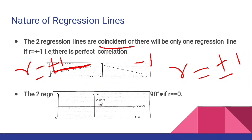Second condition: agar haari do regression lines ek doosre ko 90 degree par intersect karein — if two regression lines intersect each other at 90 degrees — yahan x on y aur y on x ek doosre ko 90 degree par intersect kar rahe hain — to yahan par r ki value kya hogi? Zero. R ki value 0 hone ka matlab inke beech mein koi relation nahi hai.